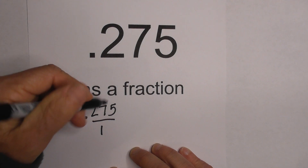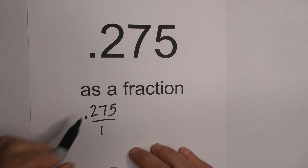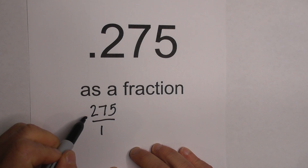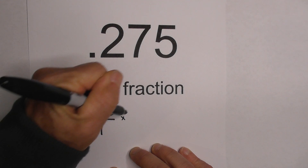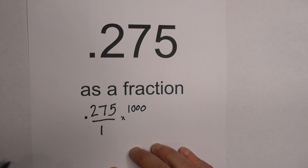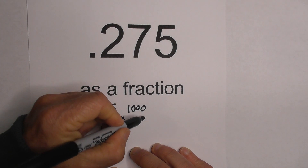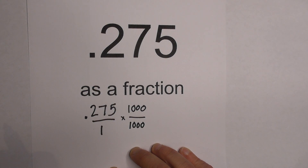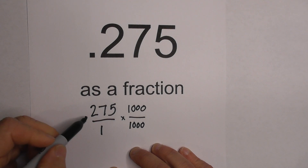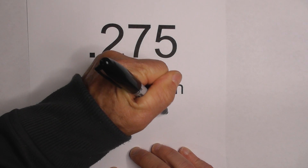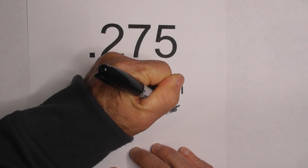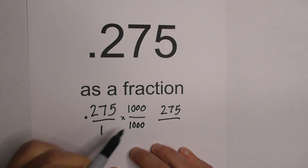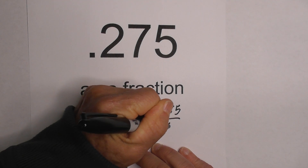So what we're going to do is get rid of the decimal, and to do that I need to move it three places to the right — one, two, three — and I can do that by multiplying by 1,000. I'll do that to both the numerator and denominator of the fraction. When I do this I get 275, and 1 times 1,000 is 1,000.